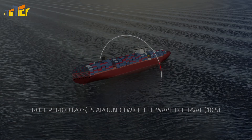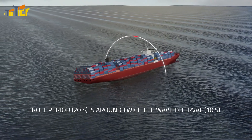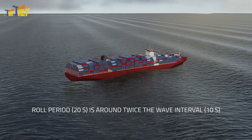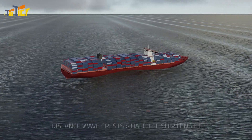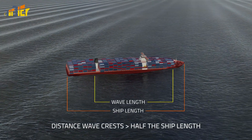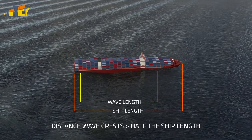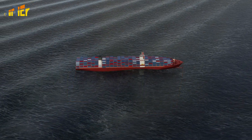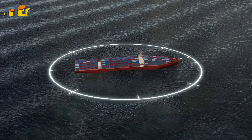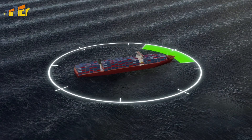If the rolling period — for example 20 seconds — is around twice as long as the wave interval — for example 10 seconds — and the distance between two wave crests is more than half of the ship length, then you need to take immediate action. Gradually change course to about beam seas, and increase the speed of the ship if safety allows.